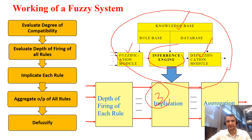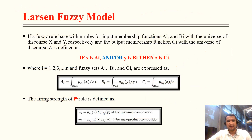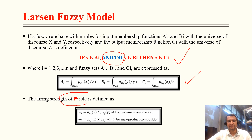In the Larsen fuzzy model, a rule can use AND, OR, or both. For example: if X is Ai AND Y is Bi then Z is Ci, or if X is Ai OR Y is Bi then Z is Ci. The firing strength of the rule can use max-mean composition or max-product composition, as discussed in the Mamdani model.